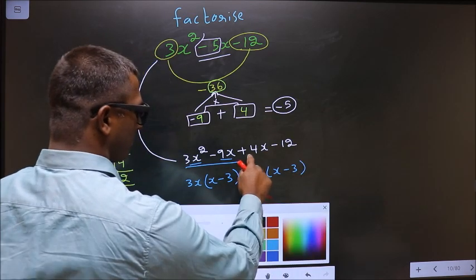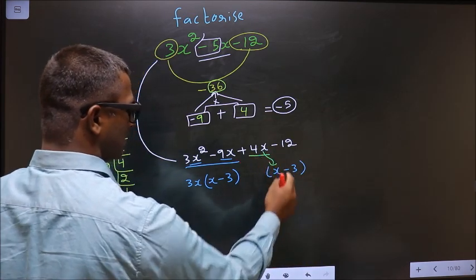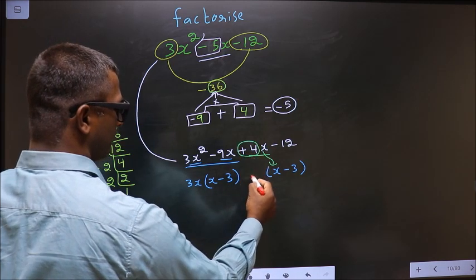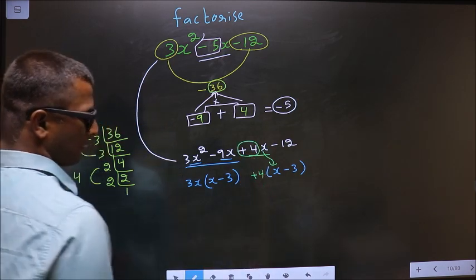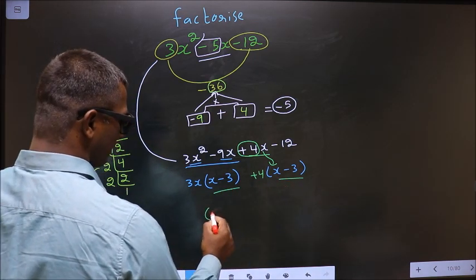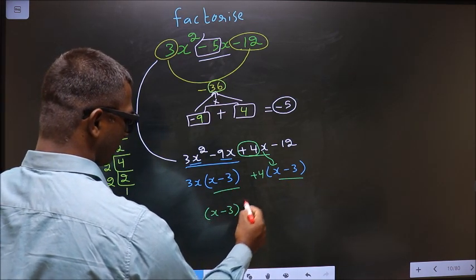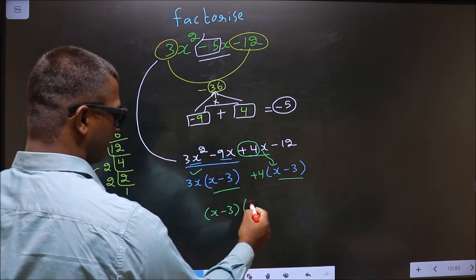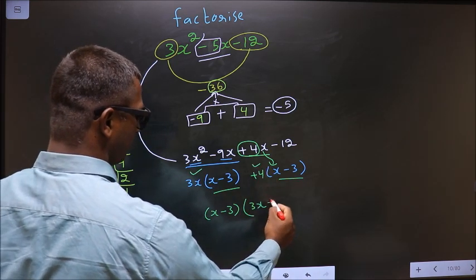Now from this x has gone inside, so outside you are left with +4. So now you should take x - 3 common. So here you are left with 3x and here you are left with 4.